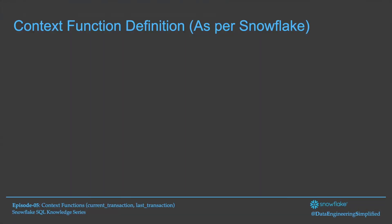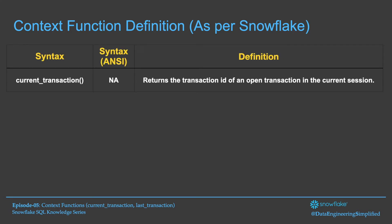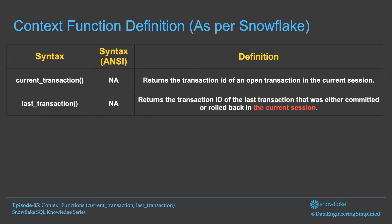Let's understand the context function definitions as per Snowflake documentation. The syntax for current_transaction is current_transaction() — ANSI syntax is not supported, so you must use it with brackets. It returns the transaction ID of an open transaction in the current session. Similarly, last_transaction() does not support ANSI syntax and must be used with brackets. It returns the transaction ID of the last transaction that was either committed or rolled back in the current session.